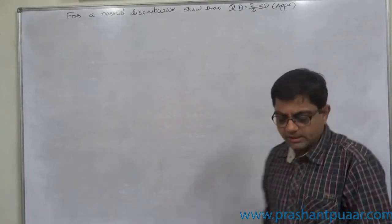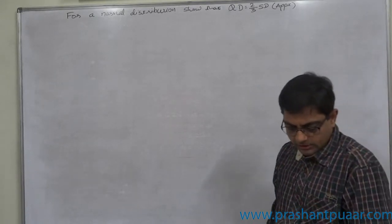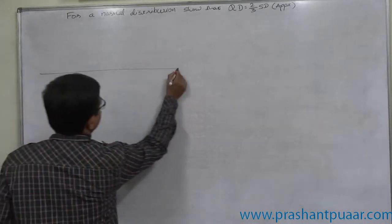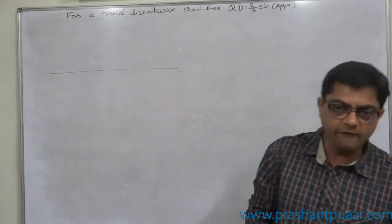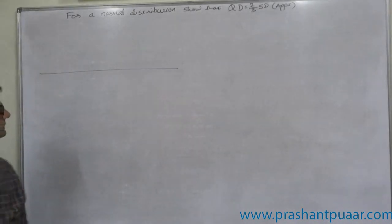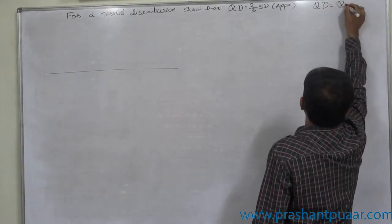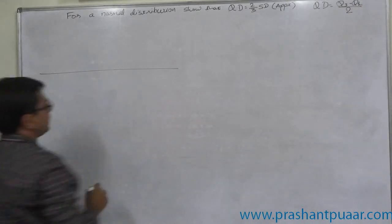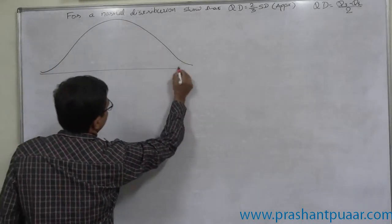The next case is for a normal distribution: show or prove that quartile deviation equals two-thirds standard deviation approximately. Quartile deviation means half of the interquartile range, or half of the difference between the highest quartile and lowest quartile. So quartile deviation equals Q3 minus Q1 divided by two.